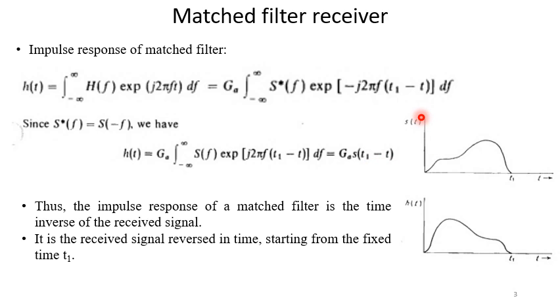So, if s(t) is this, this is the input signal time limited, then h(t) will be as you can see s(t_1 - t). So h(t) will be just this one.